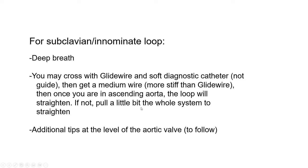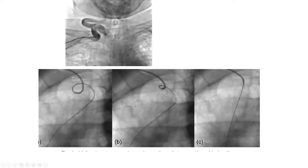Deep breath is key in those cases. So: deep breath, glide wire with a soft diagnostic catheter — a guide catheter will not be able to advance here — then a medium wire like a Rosen wire. Once you are in the ascending aorta, the loop will straighten. If it doesn't straighten, pull a little on the whole system. You can also switch the glide wire to a regular wire and pull the whole system to straighten it.